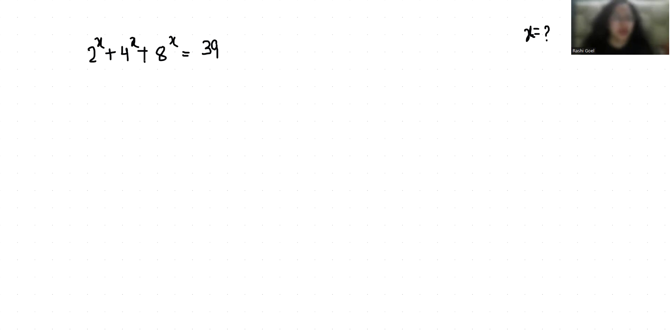So this 4^x I can write it as (2²)^x and 8 as (2³)^x equals 39. So 2^x + (2^x)² + (2^x)³ = 39.